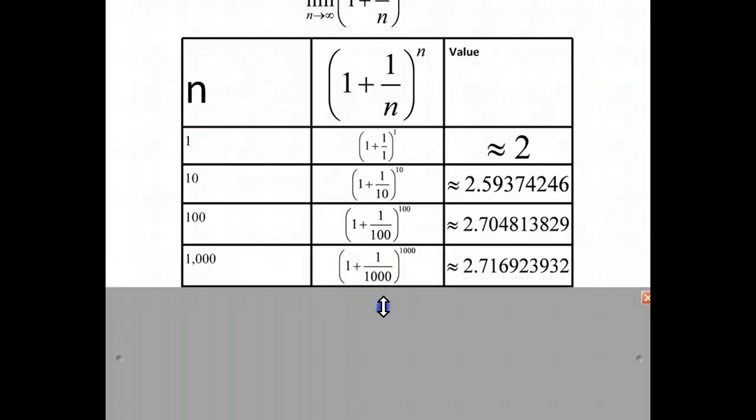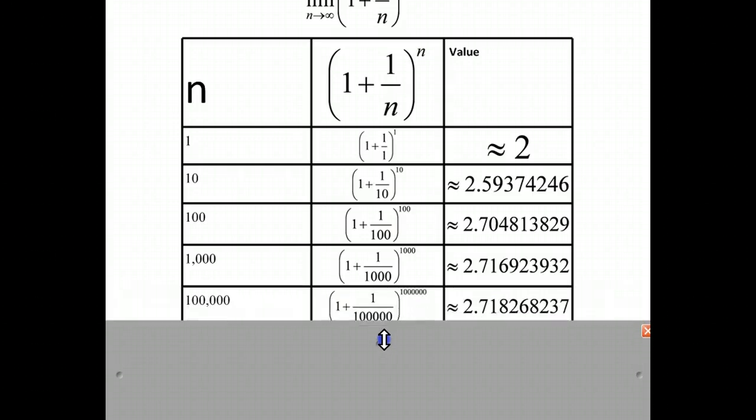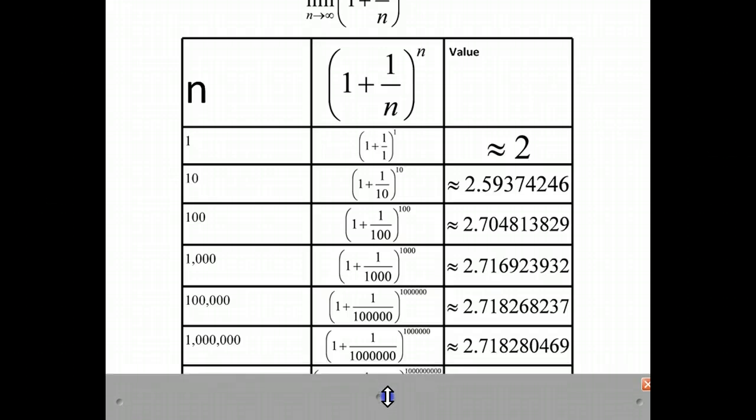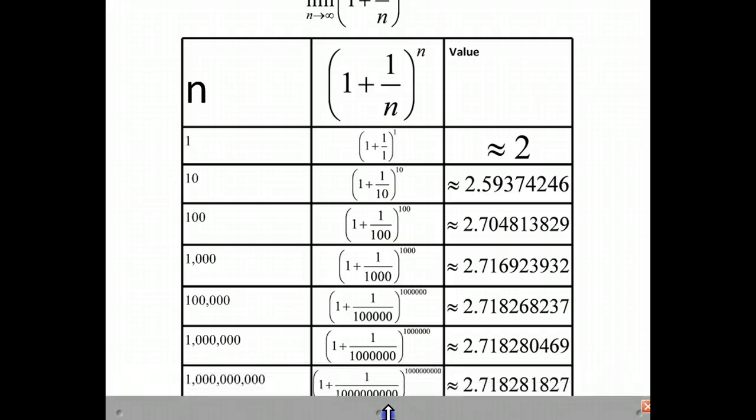We'll let n equal 1,000. And you can see the decimal approximation when we put 1,000 in. When we let n equal 100,000. When we let n equal a million. When we let n equal a billion.